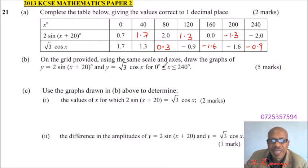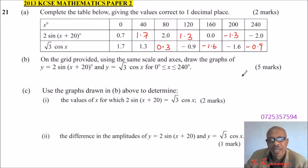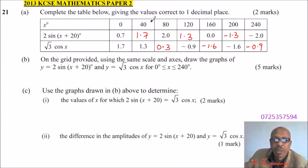Part B of the question: on the grid provided, using the same scale and axes, draw the graph of y = 2 sin(x + 20°) and y = √3 cos x for the range 0° ≤ x ≤ 240°. You get 5 marks. We'll do that on a grid on another page since we don't have enough space here.